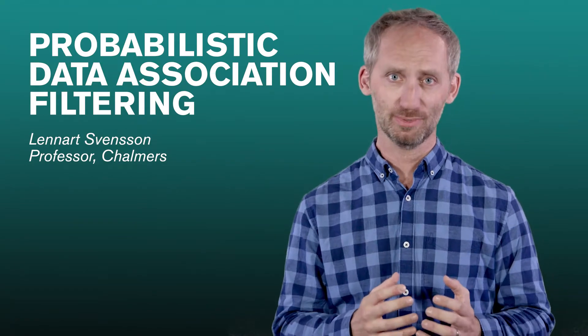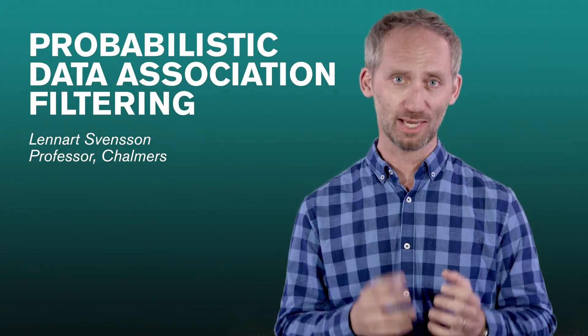The nearest neighbor algorithm approximates the posterior as Gaussian by ignoring all but one hypothesis. This has the disadvantage that we underestimate the posterior uncertainties.